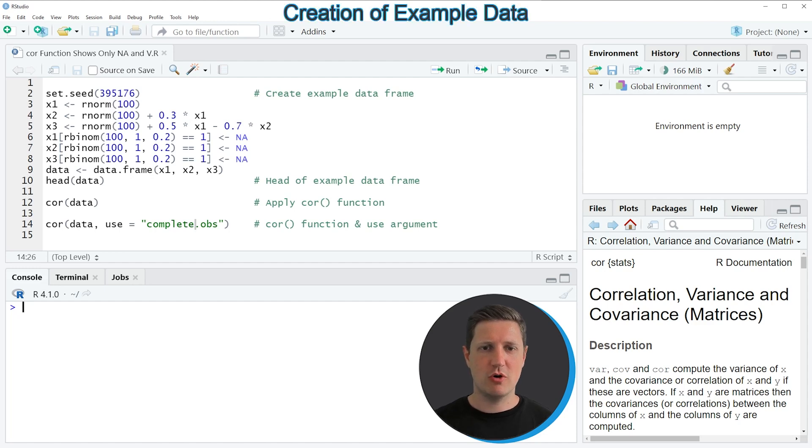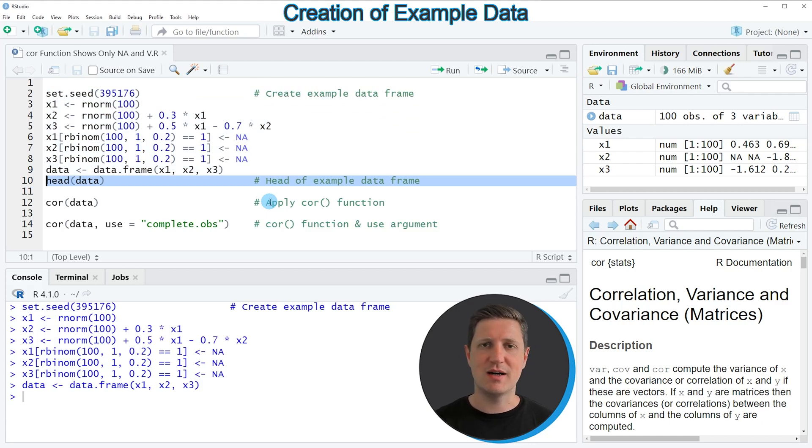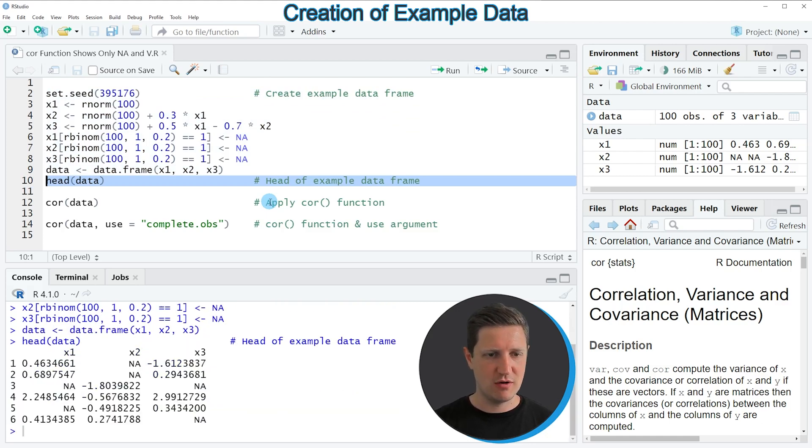In this video I'm going to show you an example based on the data frame that we can create with lines 2 to 9 of the code. If you run these lines of code you can see that a bunch of data is created at the top right of RStudio and we have also created one data set which is called data. We can print the head of this data set or the first six lines by running line 10 of the code.